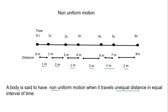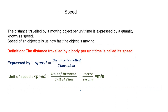When the distance traveled is unequal in equal interval of time, we say that the object has non-uniform motion. Now, speed: the distance traveled by a moving object per unit time is expressed by the quantity known as speed. Speed tells us how fast an object is moving. Speed is defined as the distance traveled by the object per unit time, expressed as: speed equals distance traveled divided by time taken. The unit of speed is meter per second.